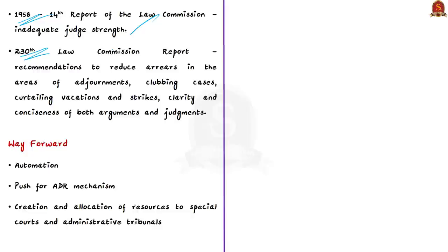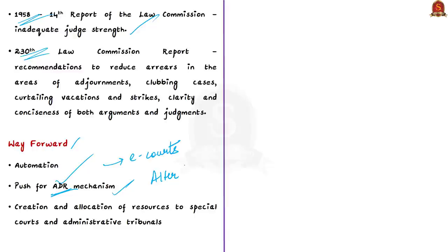One solution could be automation wherever possible, which will help increase the speed of justice. The government has the e-Courts scheme for this purpose, and once fully implemented, it can help reduce pendency. There is also a need for a greater push for the Alternative Dispute Resolution mechanism, which will not only reduce the burden on the judiciary but also provide quicker access to justice for matters which cannot wait. Our Constitution encourages settlement of disputes by arbitration, and this can be used for domestic disputes as well.